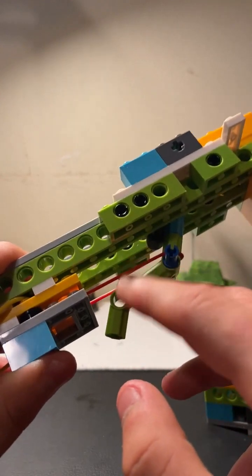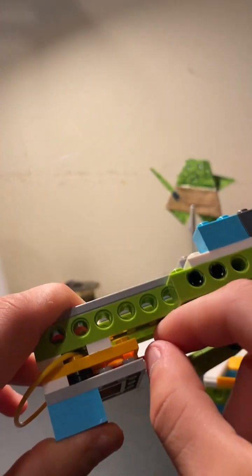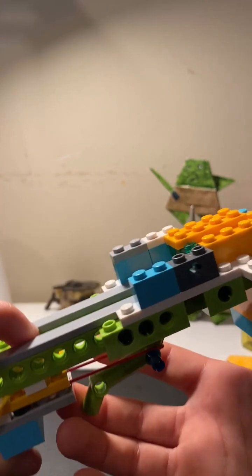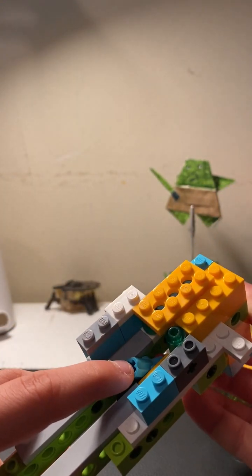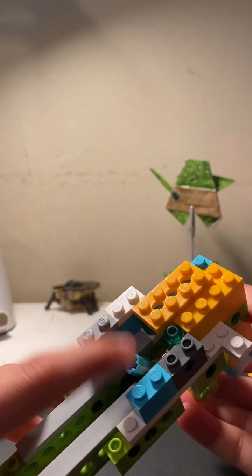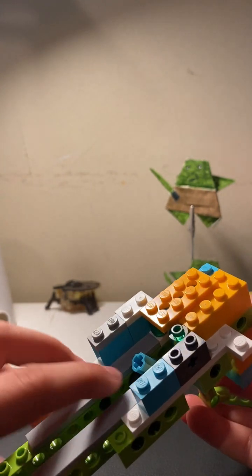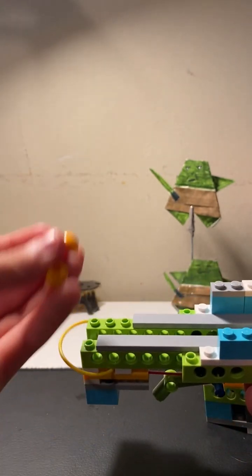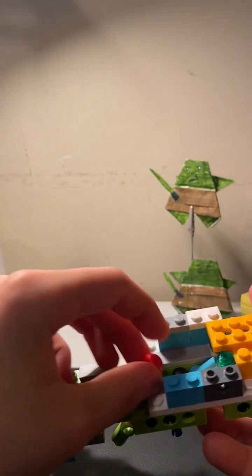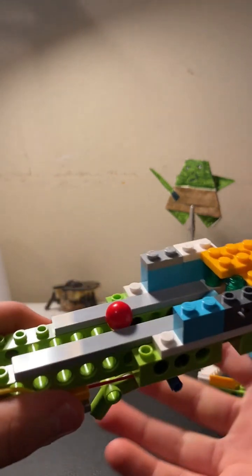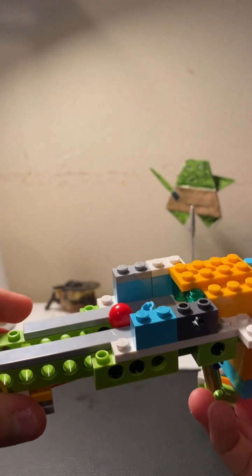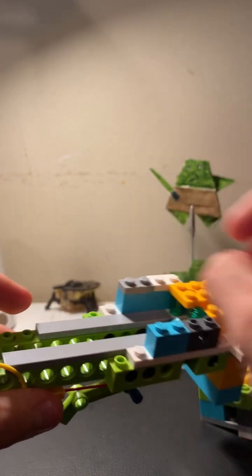This right here is the trigger, and this is one piece right here. When you push it, it goes all the way down, and this piece right here helps on, because these balls are going to go on the rail. Once you trigger this, it pushes it, but that's not enough force to shoot it.